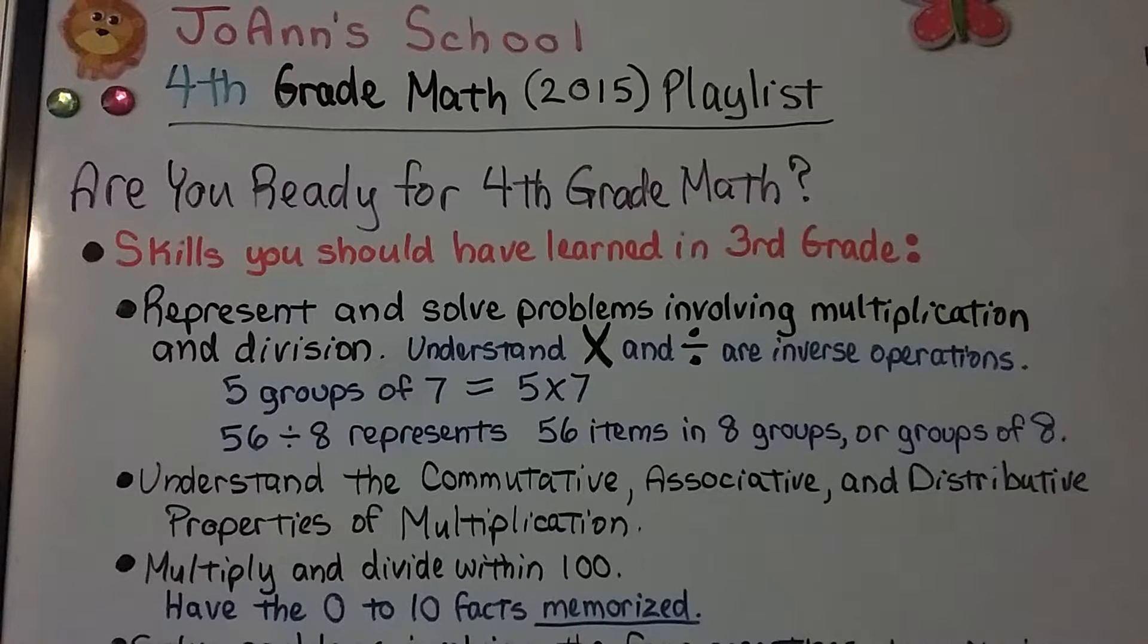Five groups of seven is equal to five times seven, and 56 divided by eight represents 56 items in eight groups or in groups of eight.